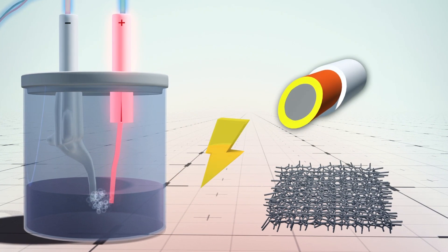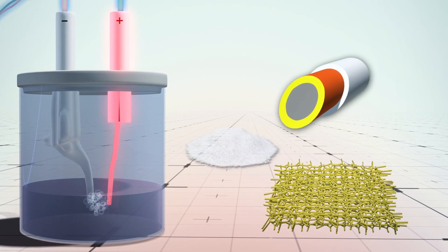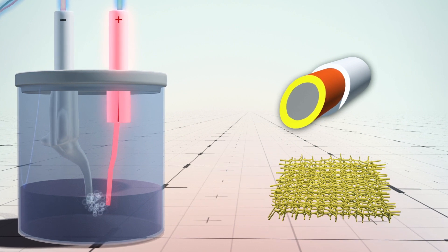Nickel foam conducts electricity, and nickel iron hydroxide sparks electrolysis. Nickel sulfide repels chloride and prevents it from getting to the core metal.